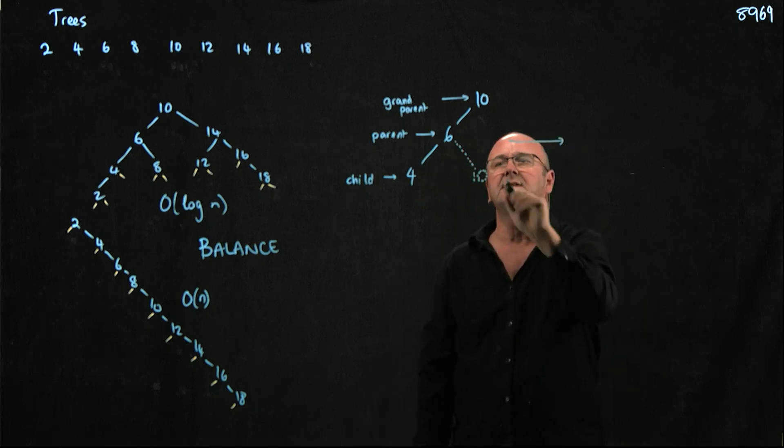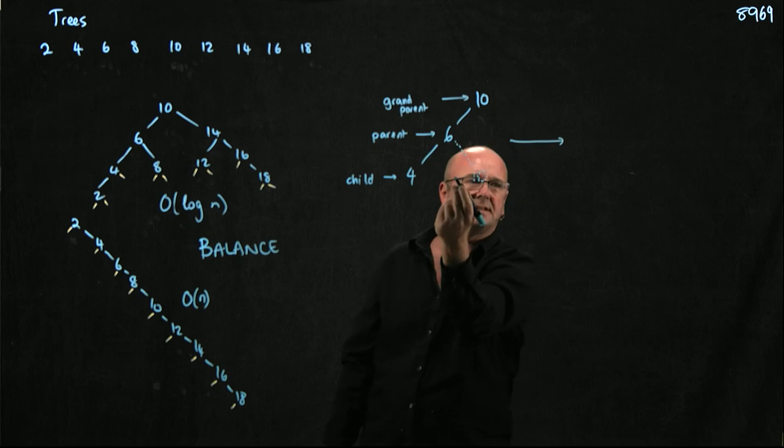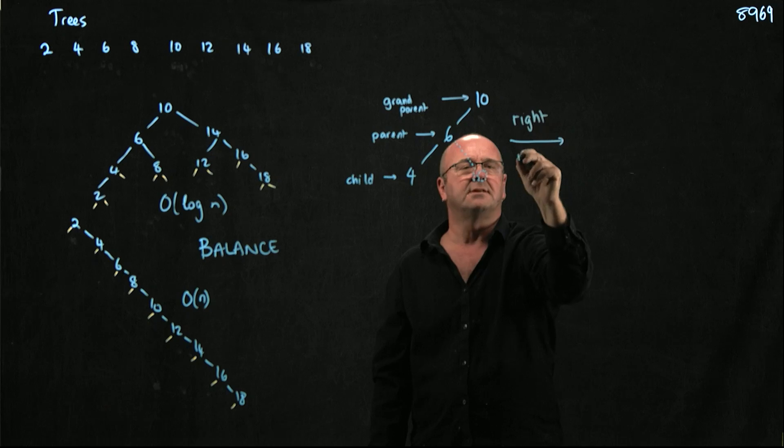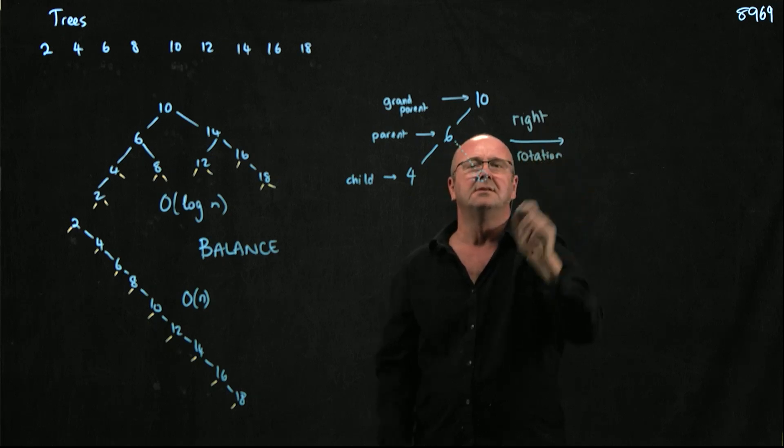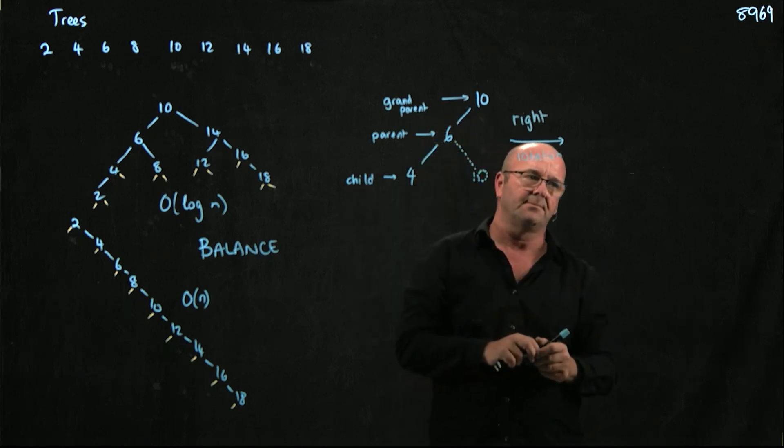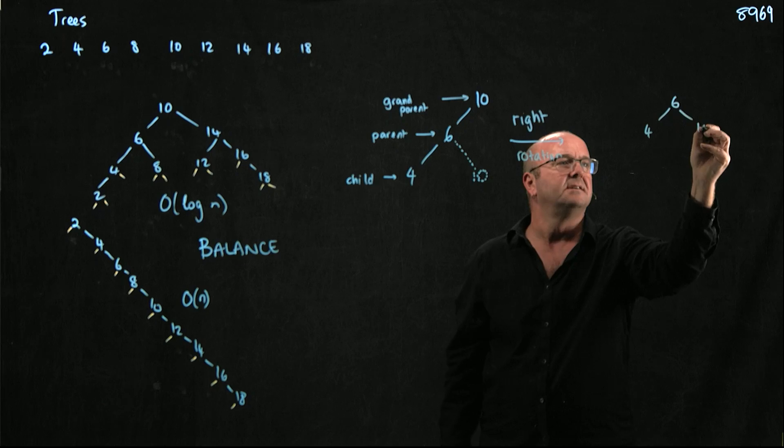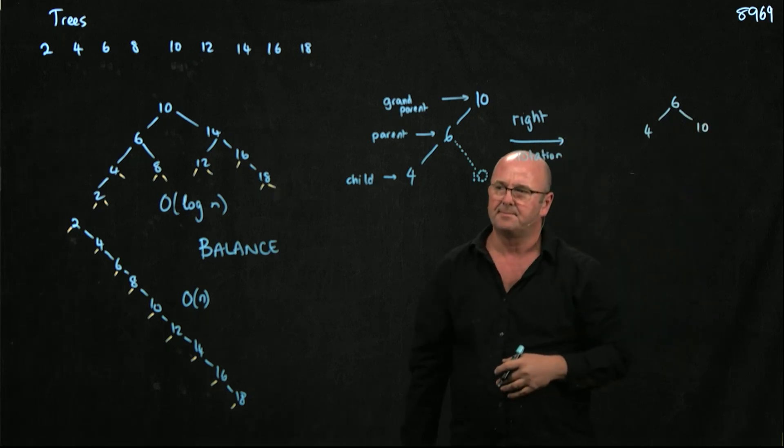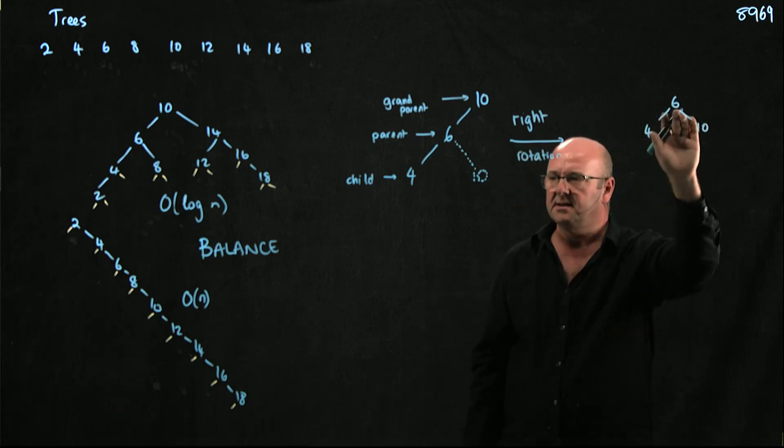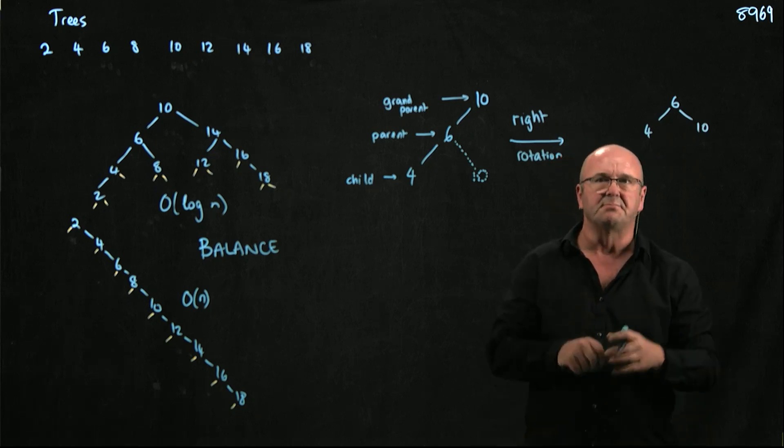It's called, in this case, it's called a left rotate, sorry, a right rotation. It's called a right rotation. Because we're on the right hand side of the numbers, yeah? And so we're going to end up with the 6, the 4, and the 10. The grandparent becomes the sibling and the parent becomes the new parent to both nodes.